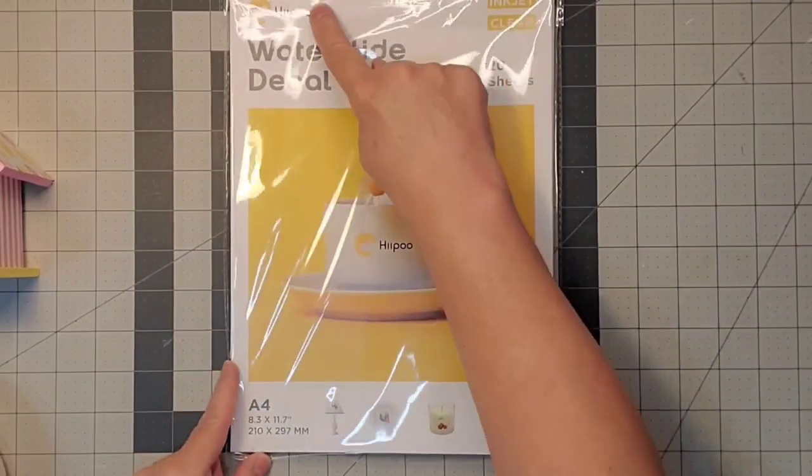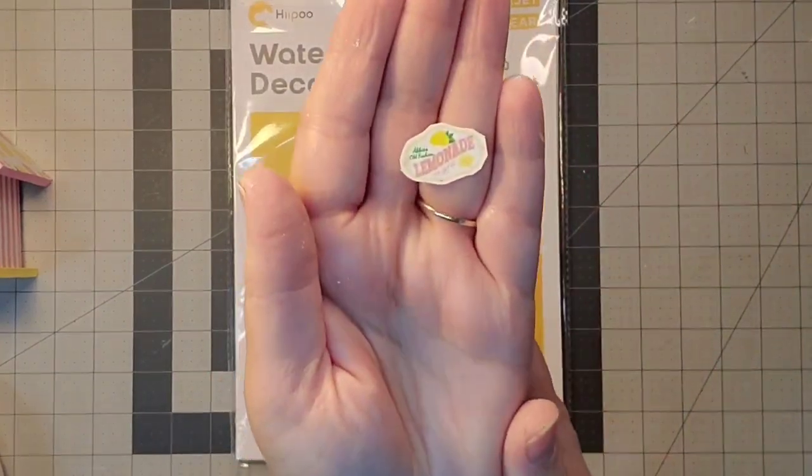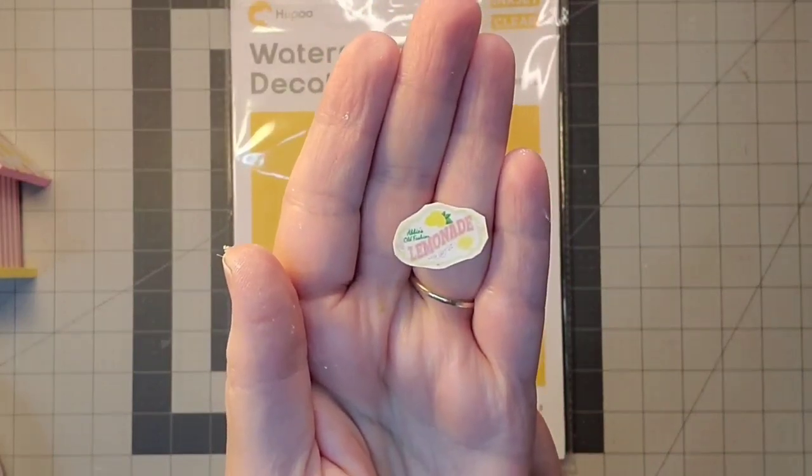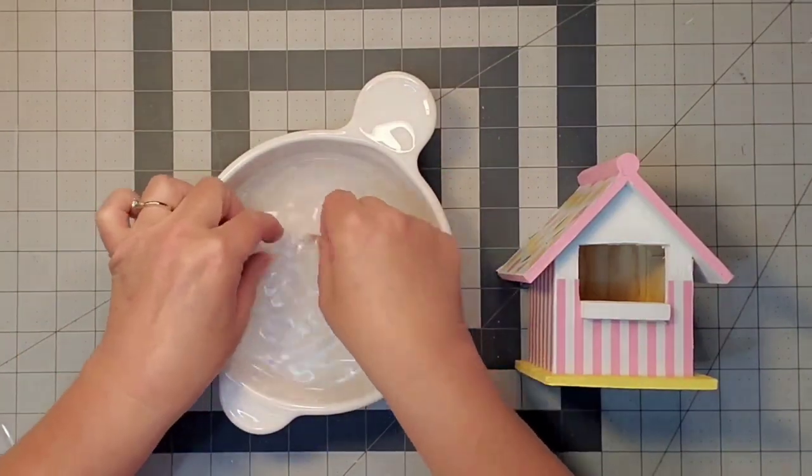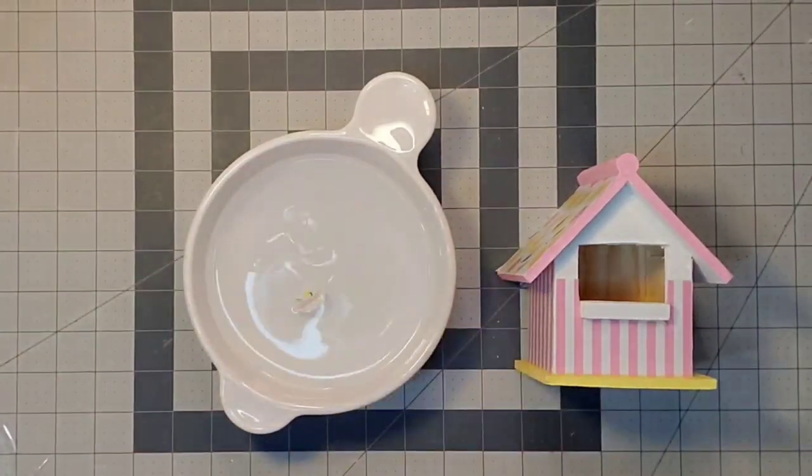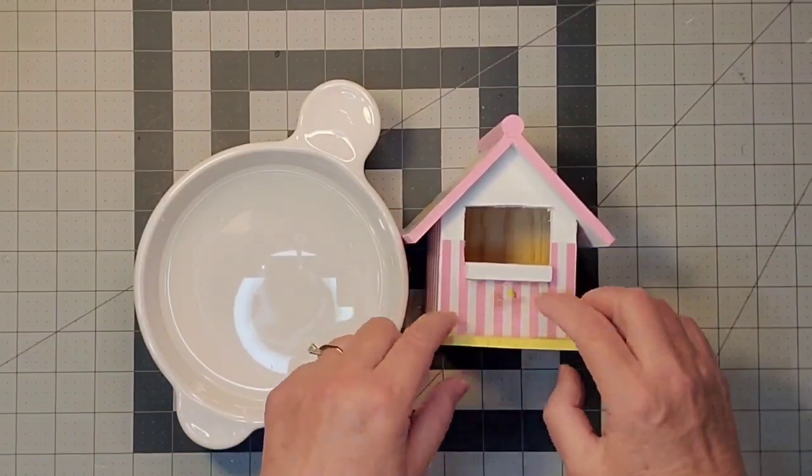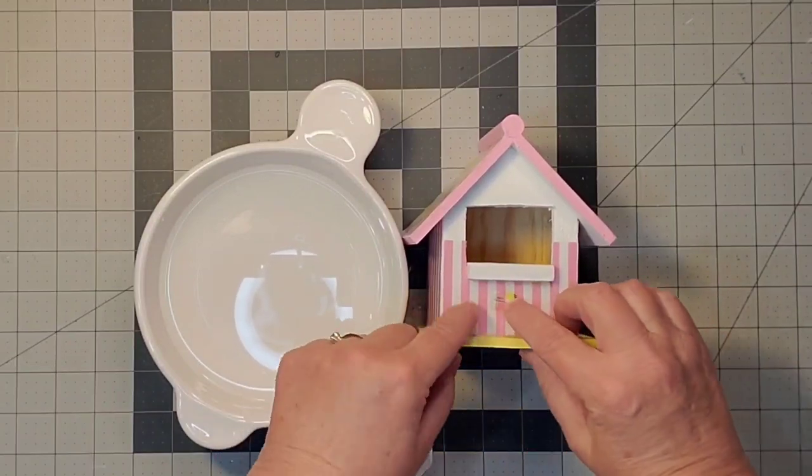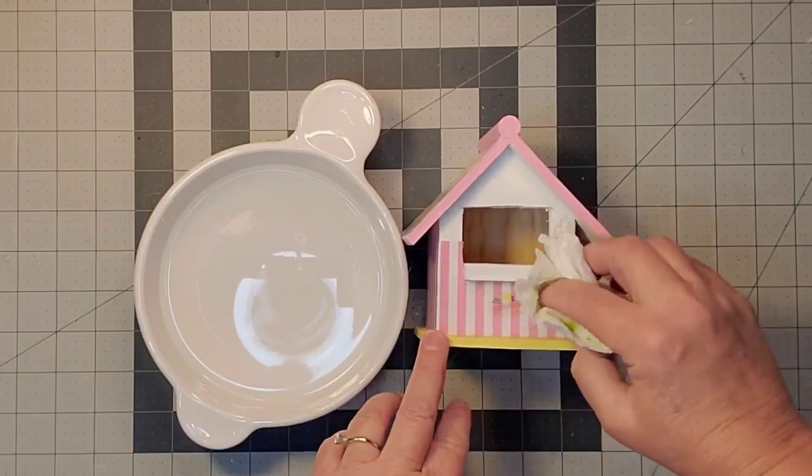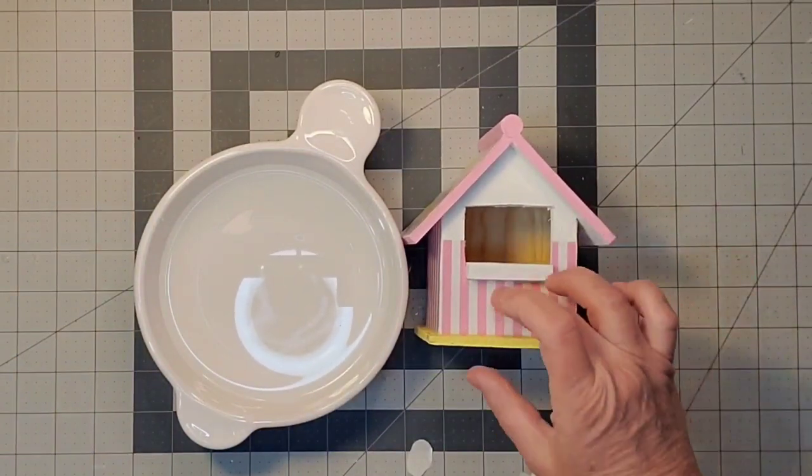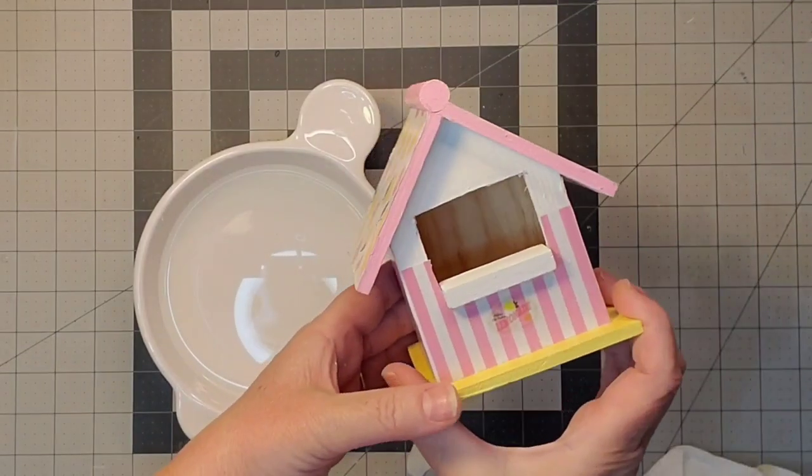One more thing to do: I'm using water slide decal paper, and I printed off our logo. I should have printed it on a white background because this decal paper is really clear, but it still came out pretty cute. I just slide it off after it's been in water about 90 seconds, then blot with a paper towel. And with that, my project is complete.